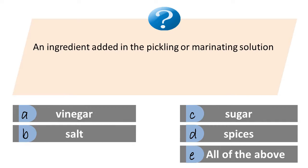An ingredient added in the pickling or marinating solution: A) vinegar, B) salt, C) sugar, D) spices, E) all of the above. The answer is E, all of the above.